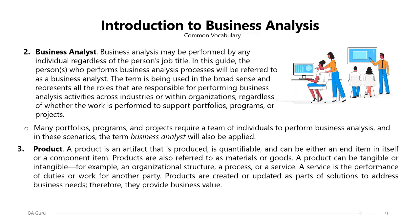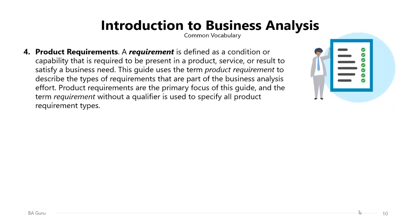The third term is the product. A product is an artifact that is produced, is quantifiable, and can be either an end item in itself or a component item. Products are also referred to as materials or goods. A product can be tangible or intangible — for example, an organizational structure, a process, or a service are all types of a product. Products are created or updated as parts of solutions to address business needs, therefore providing business value to the organization.